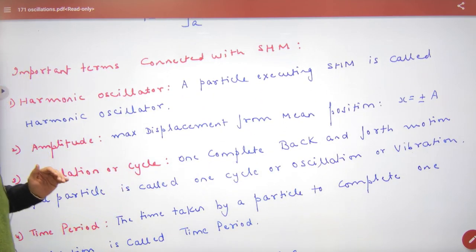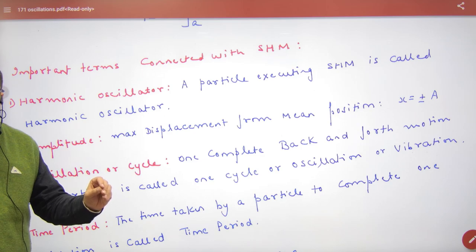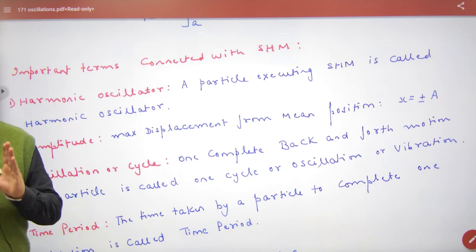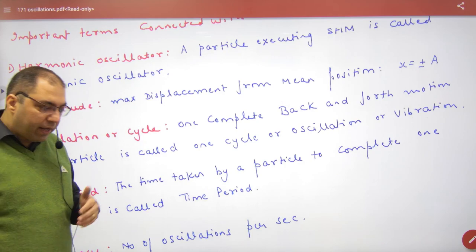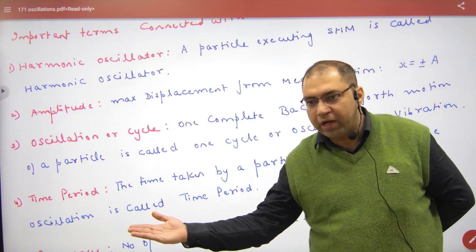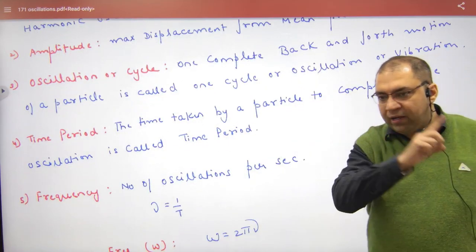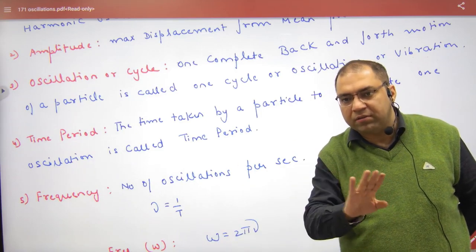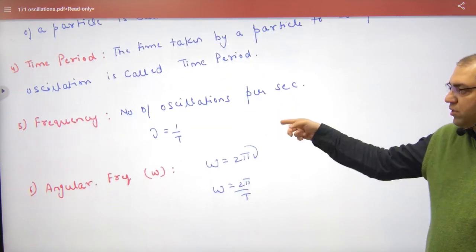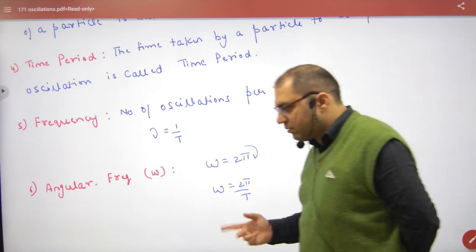Important terms related to SHM: First, a harmonic oscillator is any body moving in SHM, whether it is a pendulum, spring-mass system, or any other body. Next, amplitude is the maximum displacement. An oscillation or cycle is one complete to-and-fro motion. Time period is the time for one complete oscillation. Angular frequency ω = 2π divided by time period.